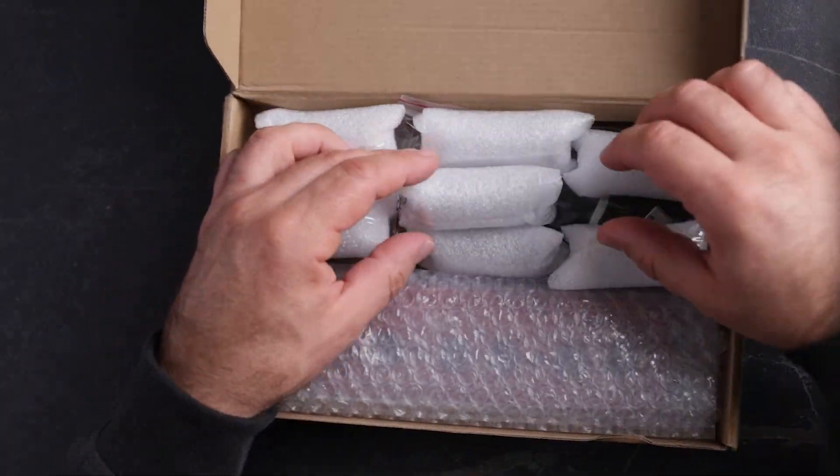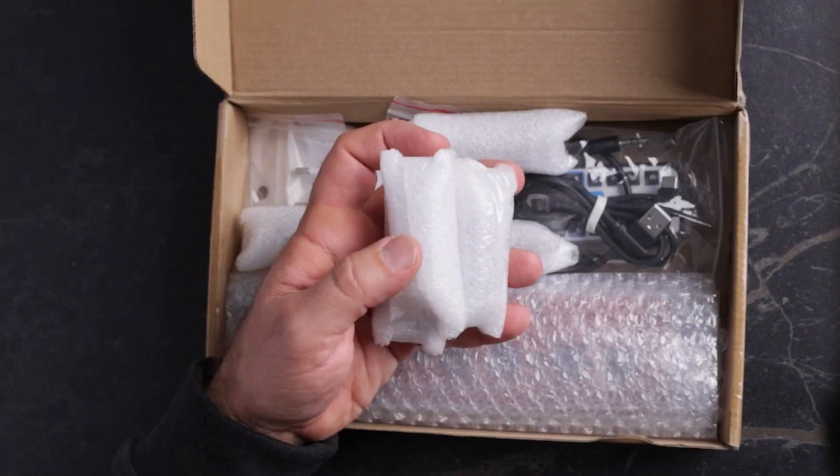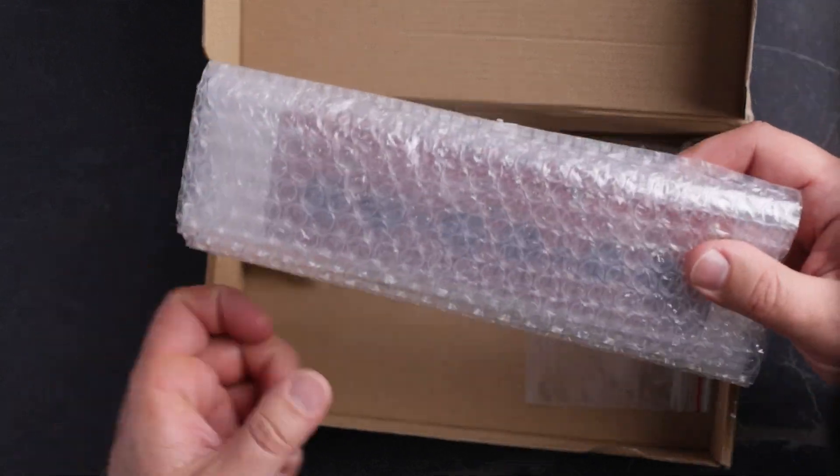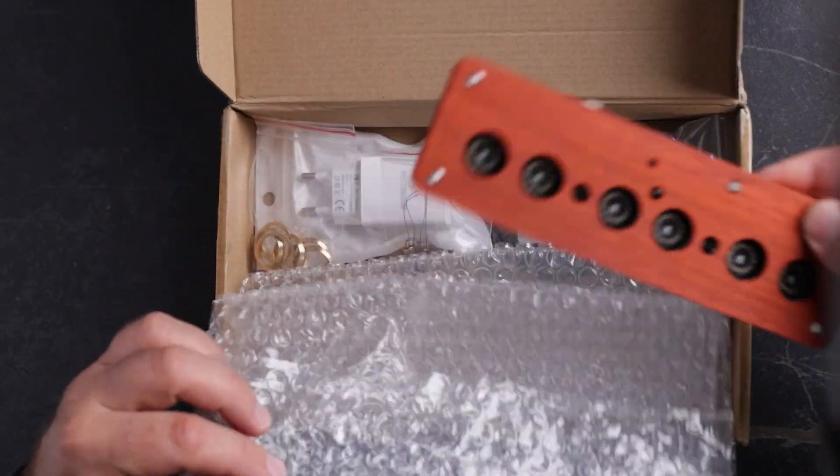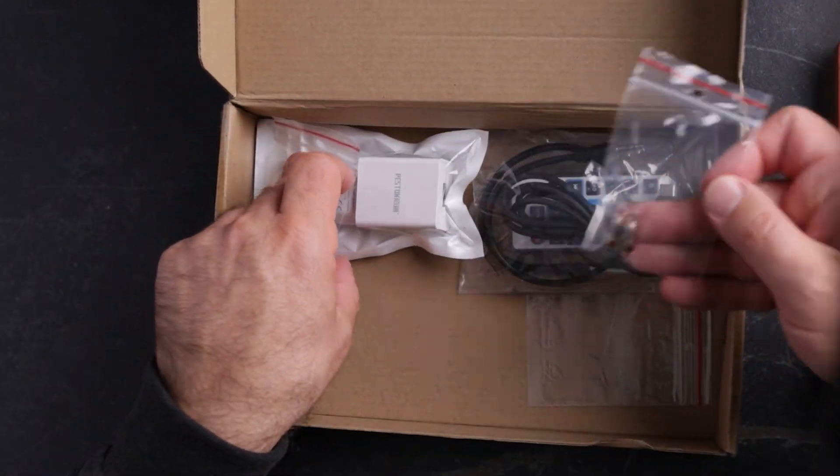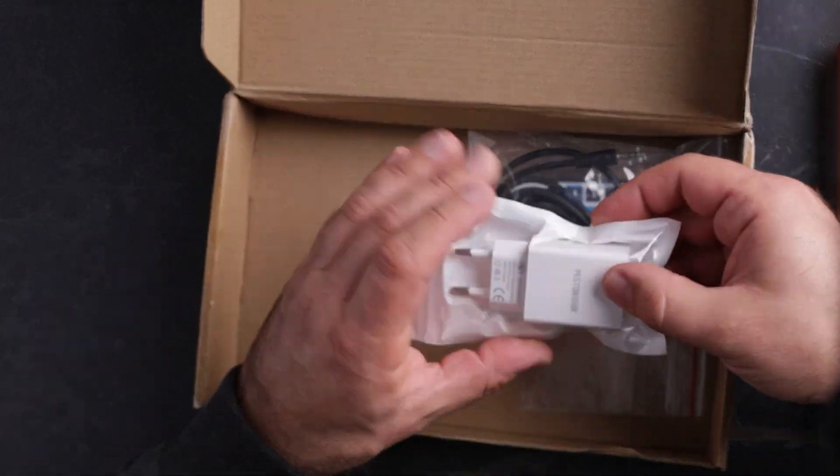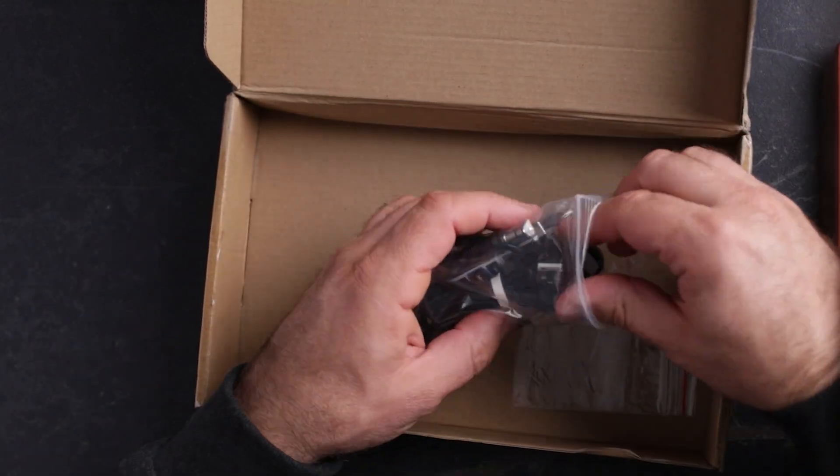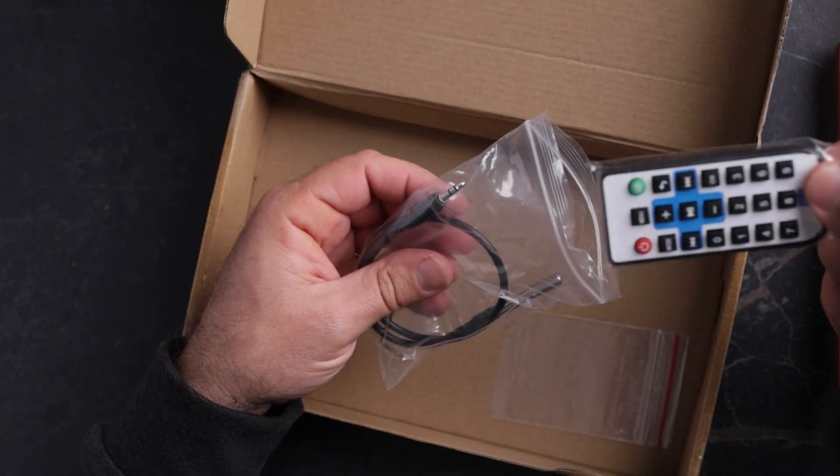The Nixie clock kit consists of Nixie tubes, main board in a wooden case, three small tubes, brass rings, power cable, and remote control.